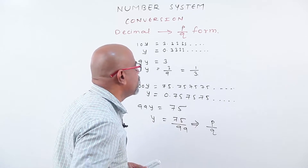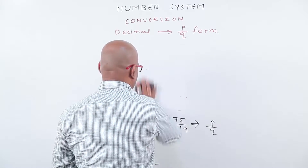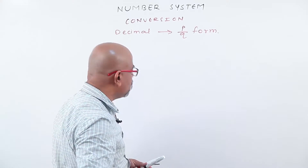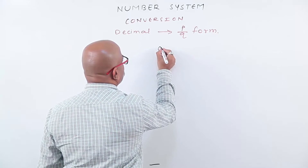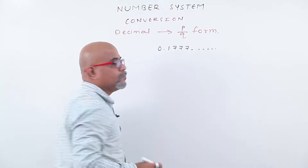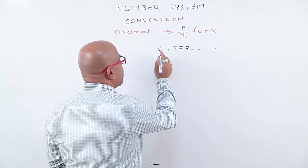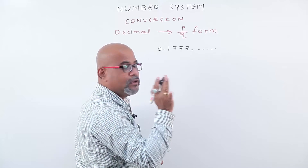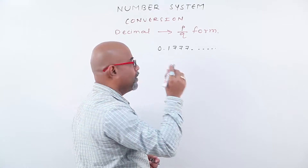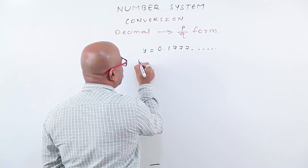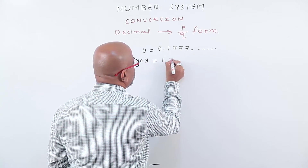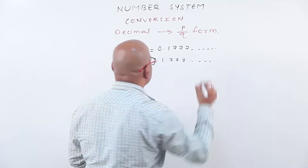Let us take some more examples. Here I write 0.17777 and so on. Here, we observe that after decimal, the first number is not recurring — only the second number is recurring. Since only one number is not recurring, multiply this y by 10 first. We get 10y equals to 1.777 and so on.